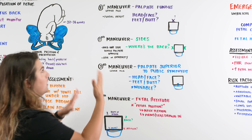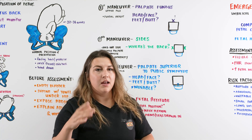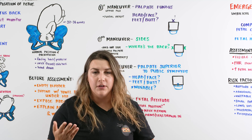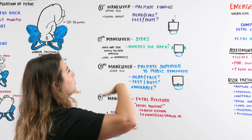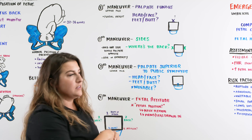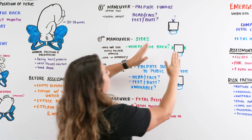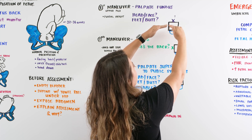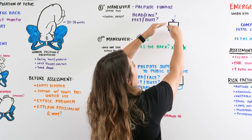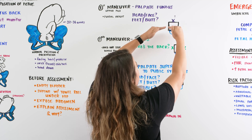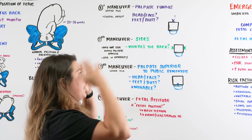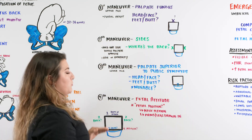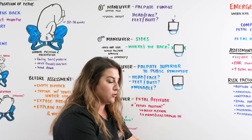Now we're going to perform the four Leopold maneuvers. I like to think of the abdomen as a square with four quadrants — the outside is what we're going to be palpating to determine baby's position. The first maneuver is called the upper pole, where we palpate the fundus. We can assess fundal height as well. We're going to palpate the top of the abdomen and feel whether this is something hard or soft — does this feel like a head, or does this feel like feet and a butt? You're facing mom as she's laying down, and you're palpating on top of the abdomen.